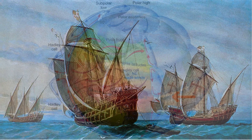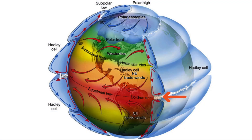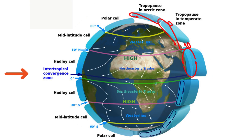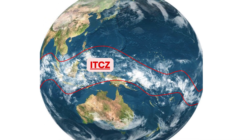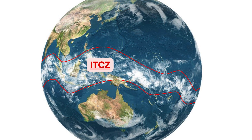Now let us discuss doldrums and ITCZ. The area where the trade winds from the north and south hemispheres meet is an area of calm winds with a small pressure gradient — that is called doldrums. Sailors feared this area since sails would get stuck for days due to absence of wind. This area is also called ITCZ — the Intertropical Convergence Zone — where winds from both sides converge. The position of ITCZ moves along with the thermal equator throughout the year. It is approximately 80 to 300 km wide, encircling the entire earth near the thermal equator, and is characterized by dense cloud cover, thunderstorms, rain, high humidity, thick forest, and hot and humid weather.